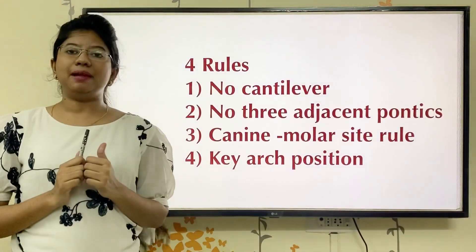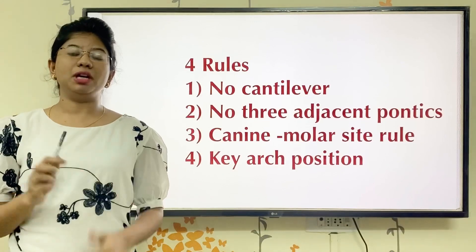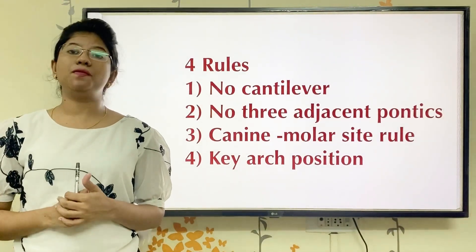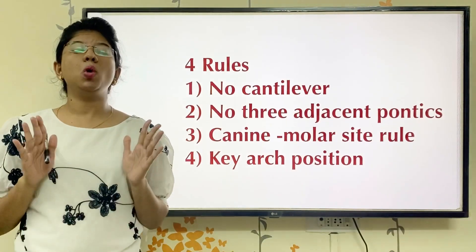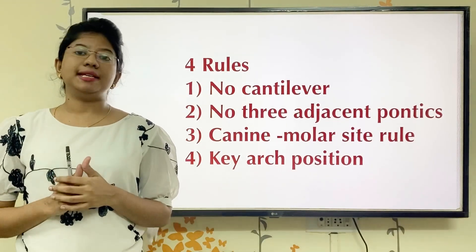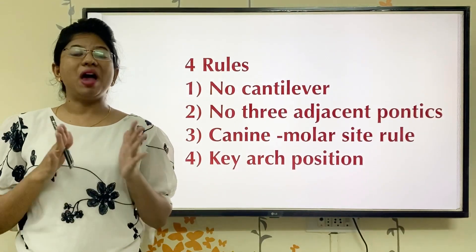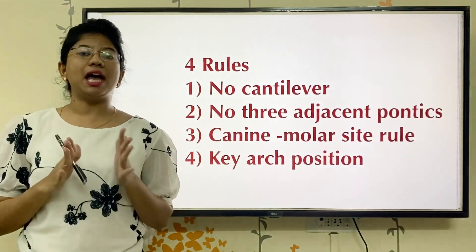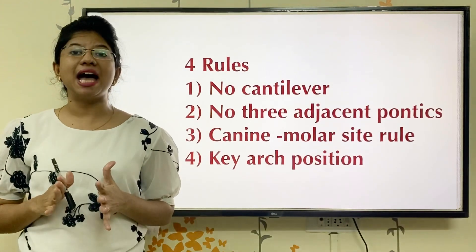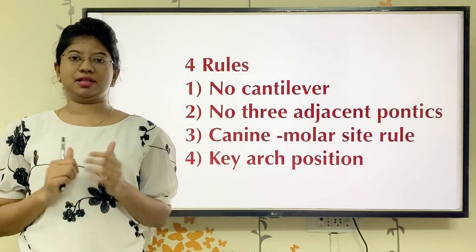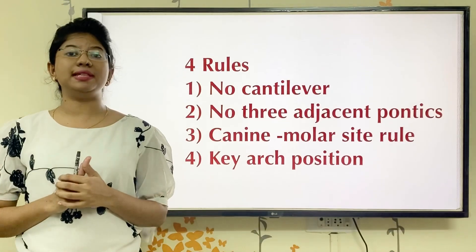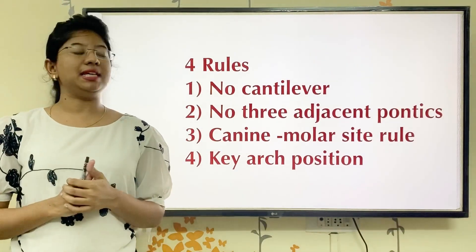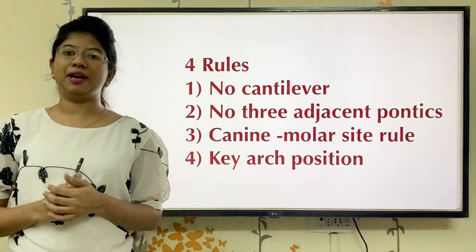For implant planning, you require to remember four main rules. The first rule says no cantilever. The second rule says no adjacent three pontic. The fourth rule says canine and molar must be considered as key implants. And the last rule says key arch position. We will see all four rules one by one.